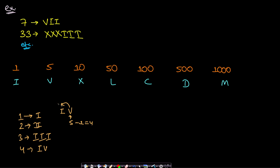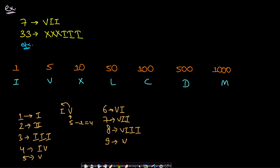For five you simply write V. For six you write VI, for seven VII, for eight VIII. But for nine you don't write V followed by four I's — instead you write I followed by X. X has value 10, and writing I to its left means subtract 1 from 10, giving nine.